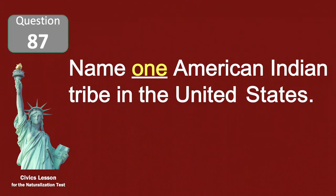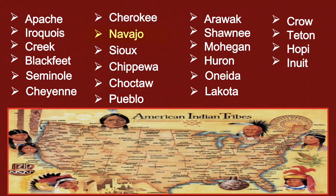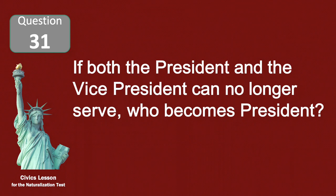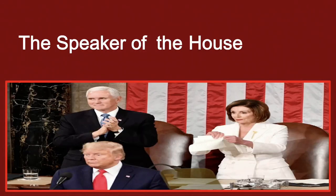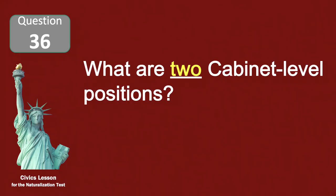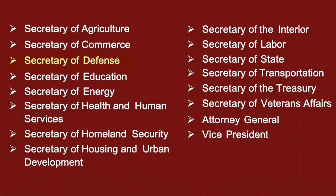Name one American Indian tribe in the United States. Navajo. If both the president and the vice president can no longer serve, who becomes president? The Speaker of the House. What are two cabinet-level positions? Secretary of Defense, Secretary of Energy.